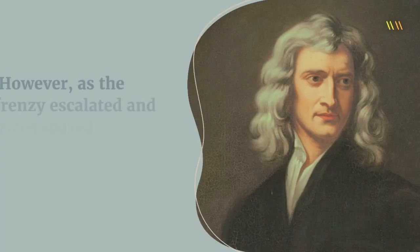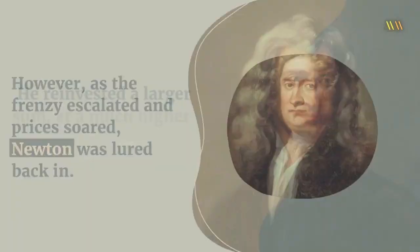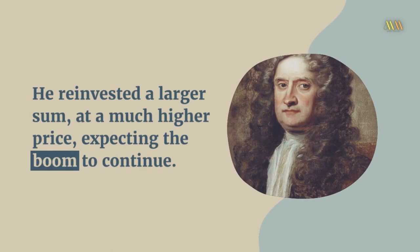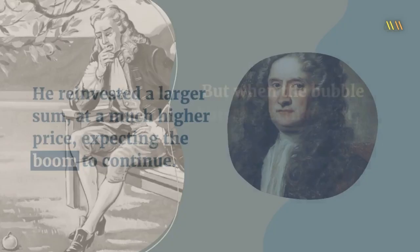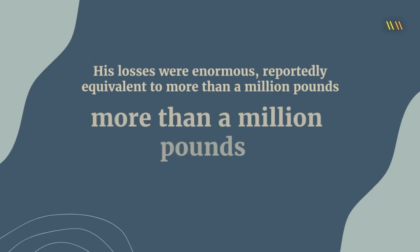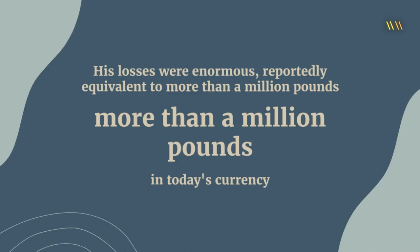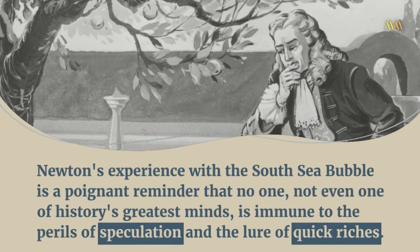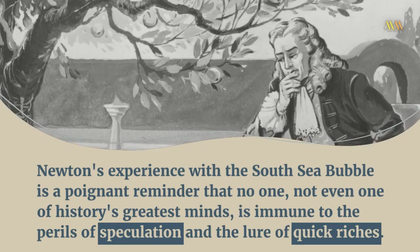However, as the frenzy escalated and prices soared, Newton was lured back in. He reinvested a larger sum, at a much higher price, expecting the boom to continue. But when the bubble burst later that year, Newton found himself on the losing end. His losses were enormous, reportedly equivalent to more than a million pounds in today's currency. Newton's experience is a poignant reminder that no one, not even one of history's greatest minds, is immune to the perils of speculation and the lure of quick riches. Reflecting on his loss, Newton reportedly said, 'I can calculate the movement of the stars, but not the madness of men' — a quote that perfectly encapsulates the unpredictable and irrational nature of financial bubbles.